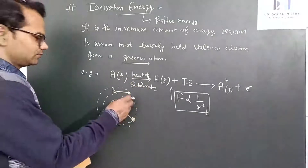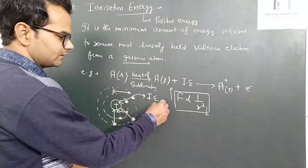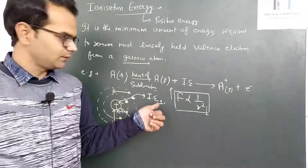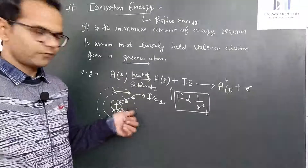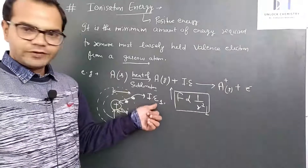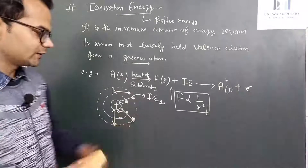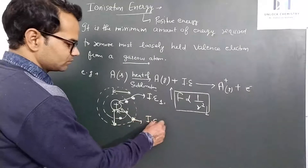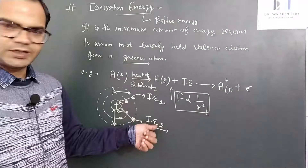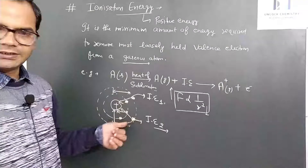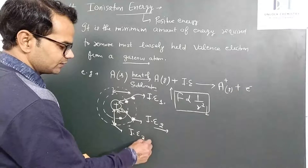If the first electron is removed from the outermost shell, it requires the first ionization energy (IE1) — the minimum energy required to remove the first valence electron. After removing the first electron, the second electron can also be removed; that requires the second ionization energy (IE2). After losing two electrons, the third electron can also be removed, requiring the third ionization energy (IE3).